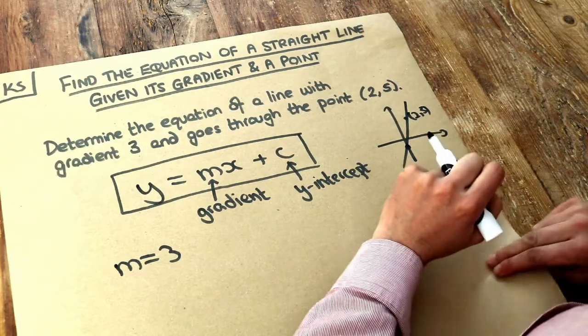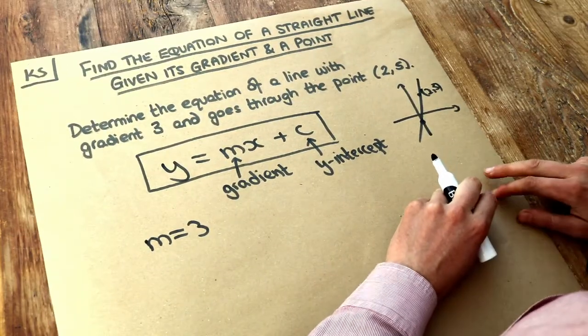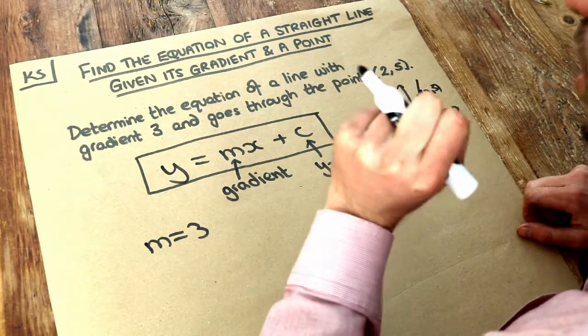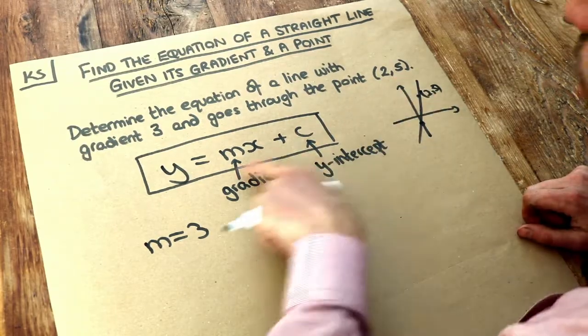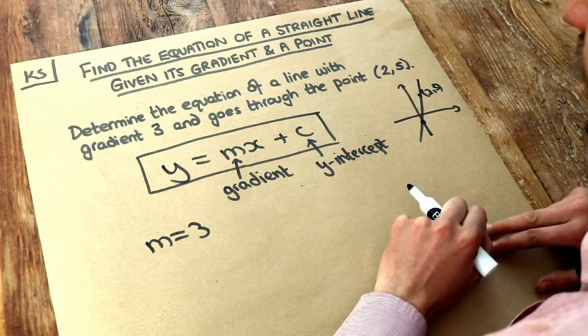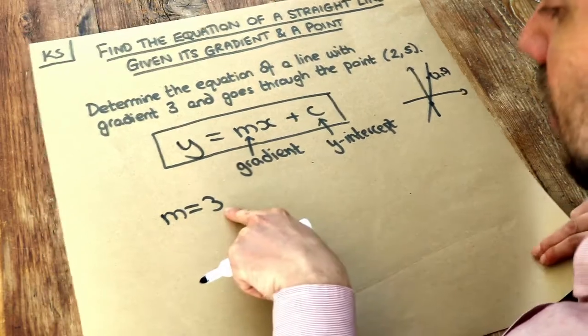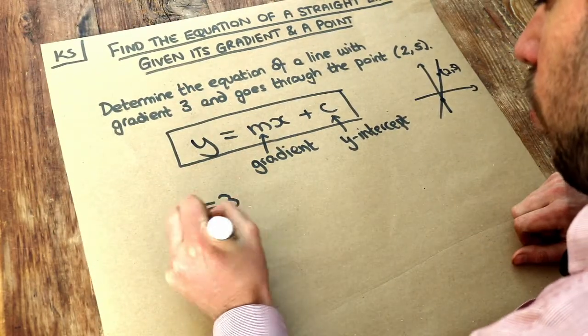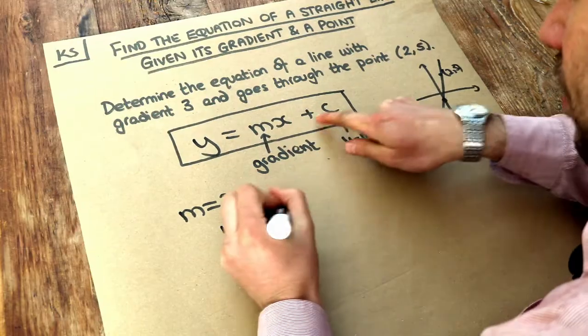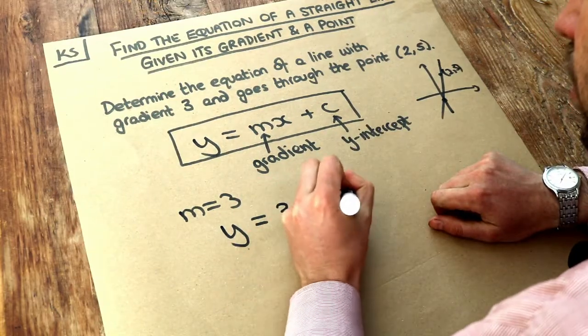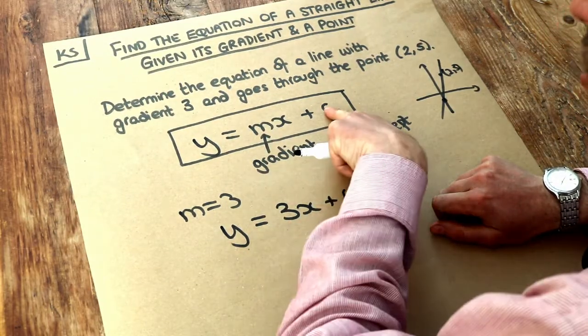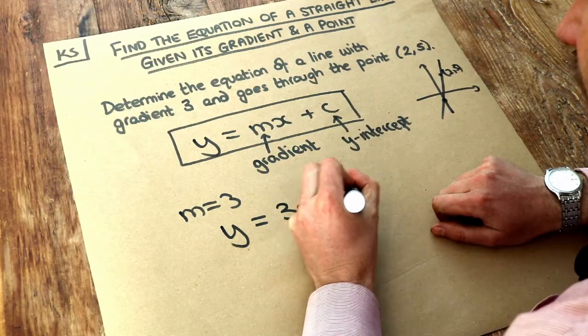But you also remember in a previous video that I said the equation of a line is like a membership rule that says any point on this line has to obey this equation. So if we know that m is 3, we can write out y equals 3x plus c. We know that the gradient is 3, but we don't know what the y-intercept is, so we're going to have to leave that as c.